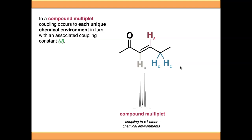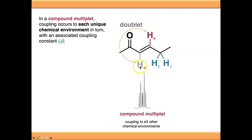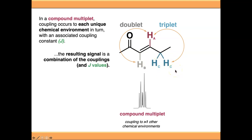In a compound multiplet we basically treat it the same way as a simple multiplet - it's just that we couple to each of the chemical environments in turn. Each of these couplings could have a different J constant, or it could have the same J constant, but it would be coincidental if it did. Starting out by looking at the coupling of proton A with proton B, you would expect this to be a doublet based on the n+1 rule. If you were to couple HA to HC, you would expect that to be a triplet because there are two equivalent protons in that chemical environment.